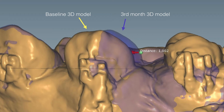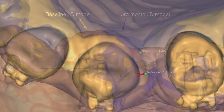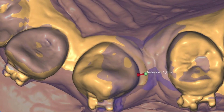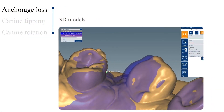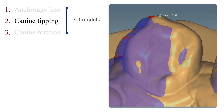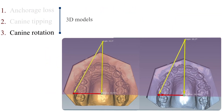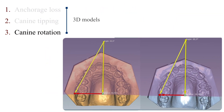The canine in the baseline model is shown in yellow and in the third-month model in purple. Canine movement at three months has been measured using the 3D digital model.